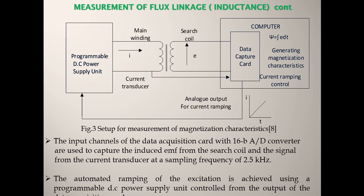For the flux linkage or inductance measurement method, there is a programmable DC power supply unit. We have transformer-type coils: the primary is the main winding and the secondary is the search coil. A current transducer is connected in the primary main winding, and on the output we have a data capture card that generates magnetizing characteristics via current ramping control — from the induced EMF we can generate the data.